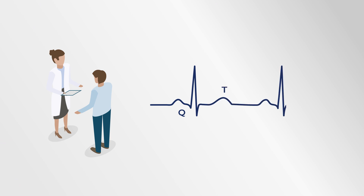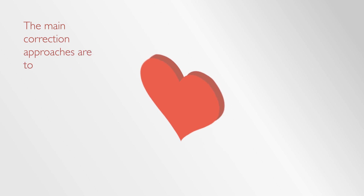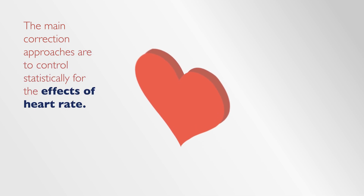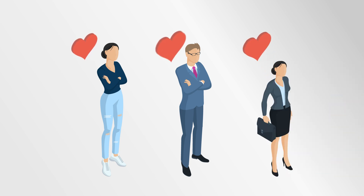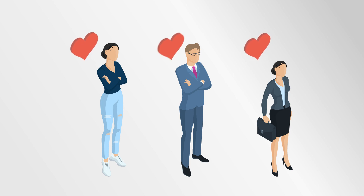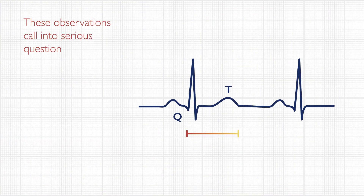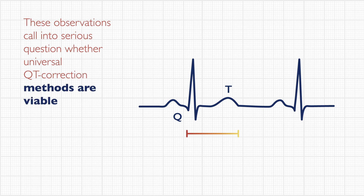Unfortunately, the QT interval is highly variable and researchers must correct for this variation between research subjects in their measurements. The main correction approaches are to control statistically for the effects of heart rate. Universal QT correction methods apply a fixed formula to do this and do not consider how the relationship between QT interval and heart rate differs not just between subjects, but even for the same subject at different points in time. Furthermore, circadian rhythms and other external factors also influence the QT and heart rate relationship. These observations call into serious question whether universal QT correction methods are viable or appropriate.